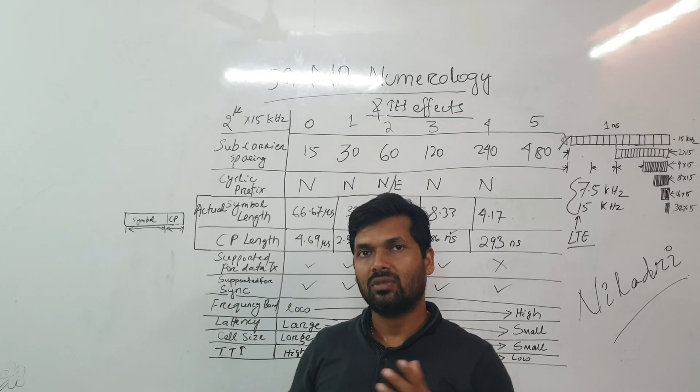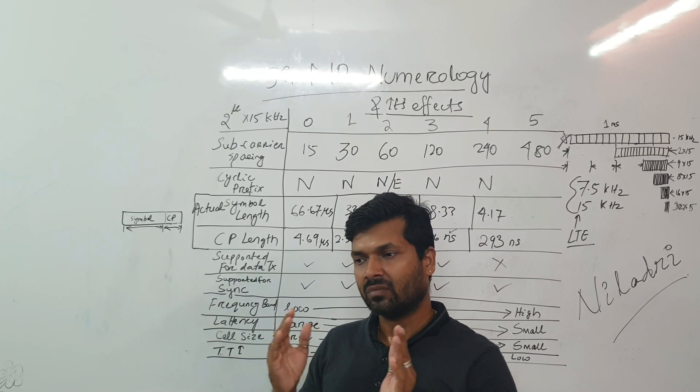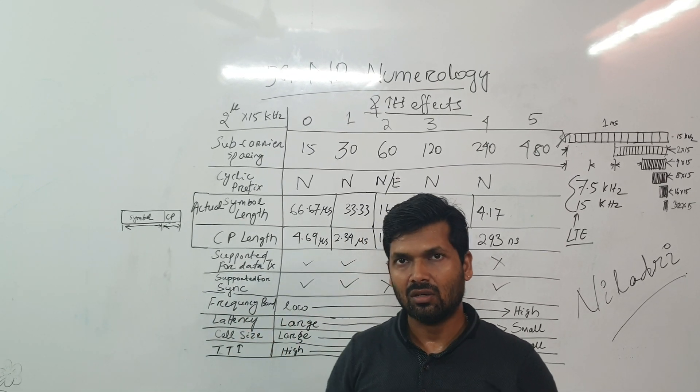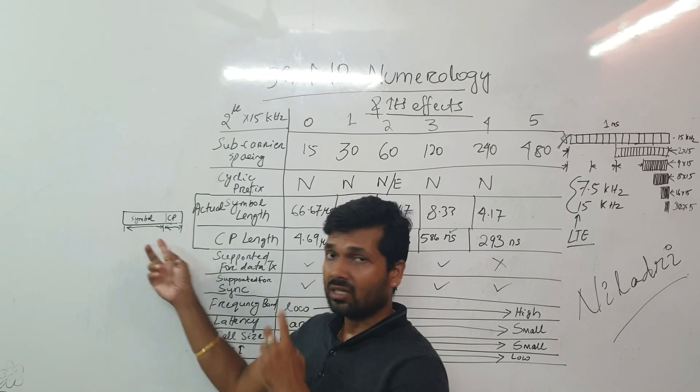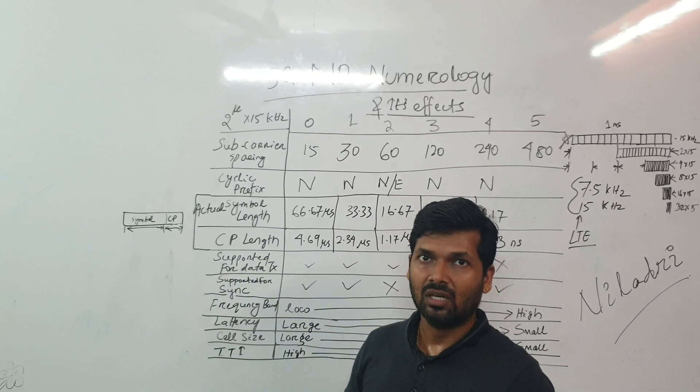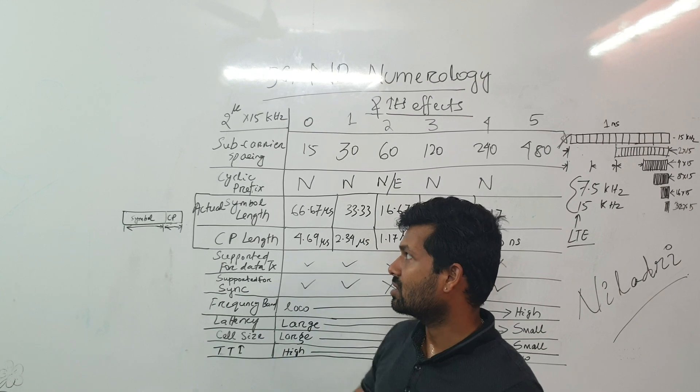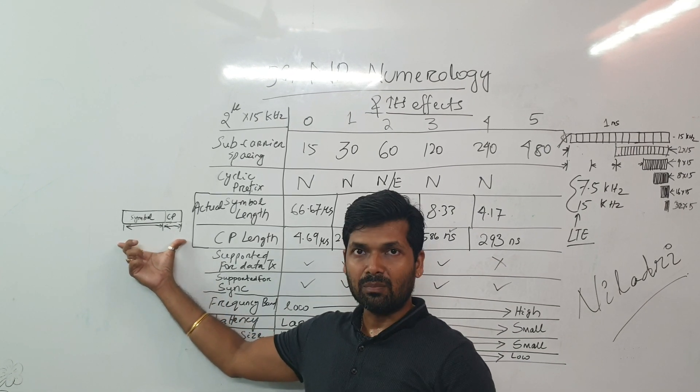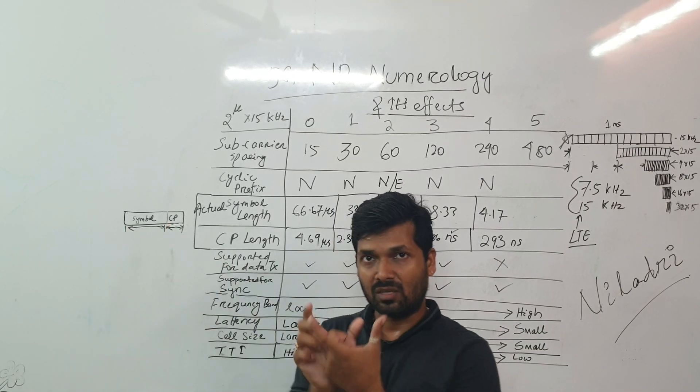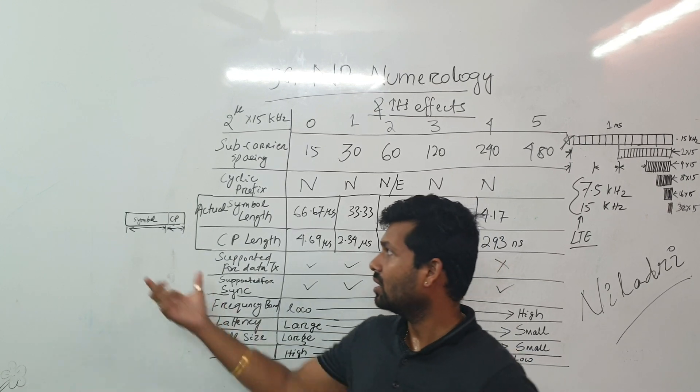So if we are expecting any inter-symbol interference or any kind of interference, then cyclic prefix can help us mitigating that inter-symbol interference. So that's why in a total symbol time we transmit the symbol and the cyclic prefix combined together.